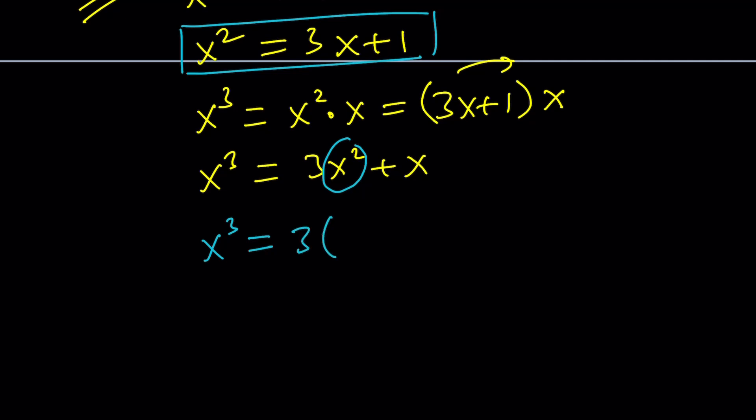Let's replace x squared with 3x plus 1 and then plus x. So, from here, x cubed is going to be 9x plus x, which is 10x plus 3. That's just another expression that I could use. And what am I going to do with this? Well, we're supposed to find x cubed minus 1 over x cubed.